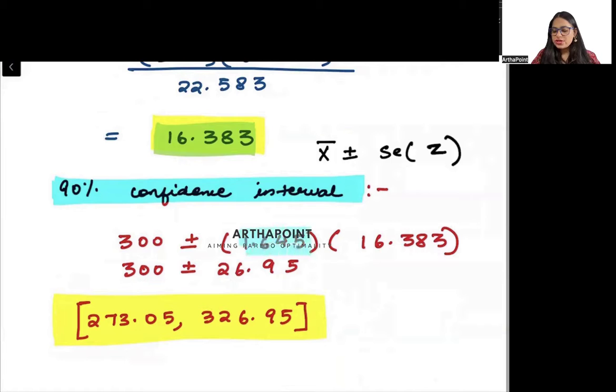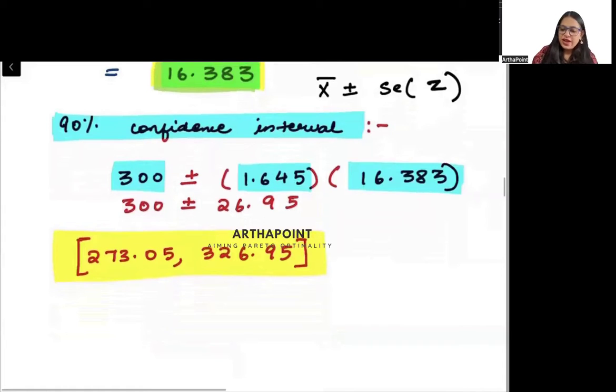So the value of z is 1.645. The standard error is 16.383. This is what we have calculated, and the mean value is 300. So when we will be putting these values,